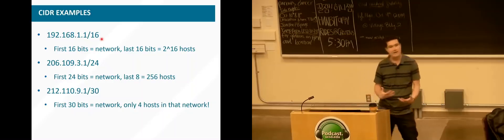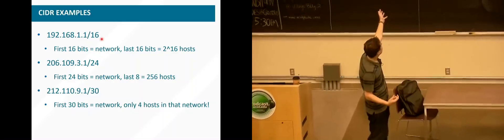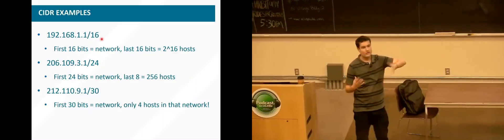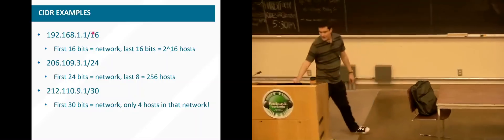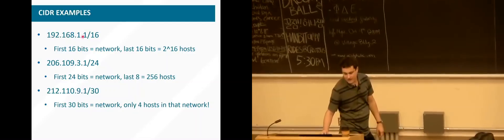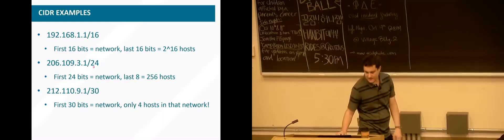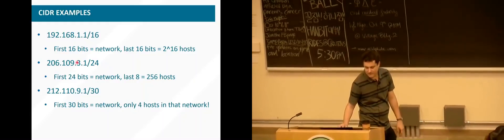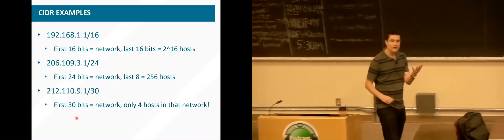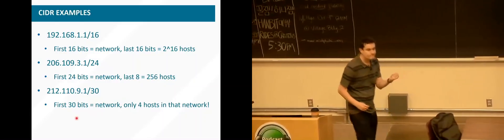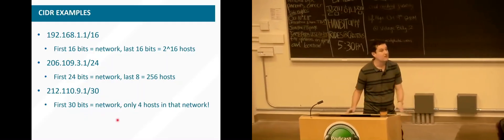Whenever you have the slash, it tells you how many of the first bits are used for the network. In the first case, 16 bits are used for the network and the last 16 bits for the hosts. In the second case, the first 24 bits define the network and the last 8 define the host. And here we've defined a network that actually only has four hosts. That's how people specify addresses and address ranges today — the network size has to be a power of two.